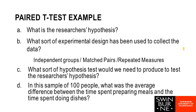Question two: what kind of experimental design was used? We've got the same person being asked how long they spent preparing meals and how long they spent doing dishes — two measurements with the same person — so it's a repeated measures design. Question three: what sort of hypothesis test would we need? We know it's paired data, so paired samples t-test is what we need to be using.